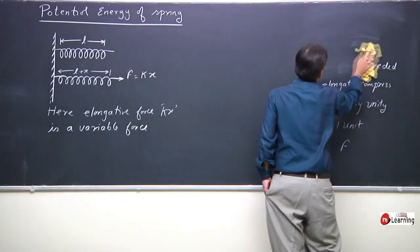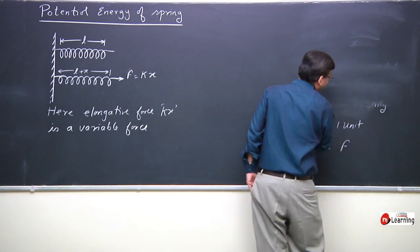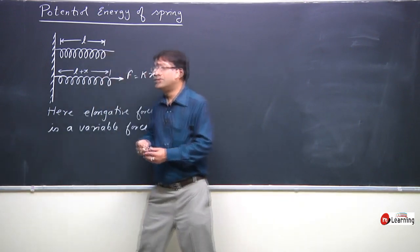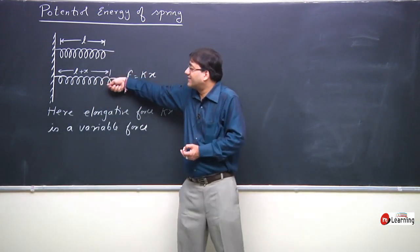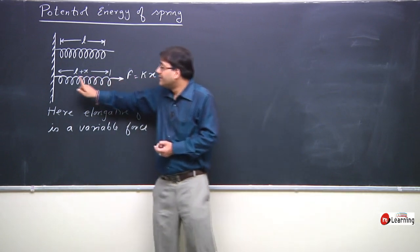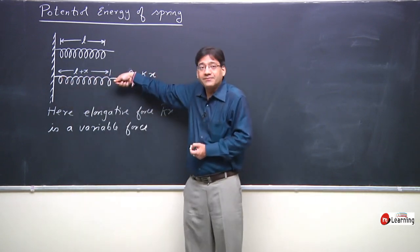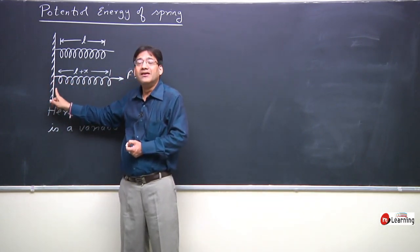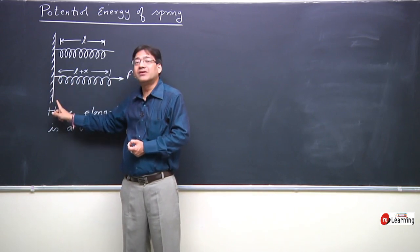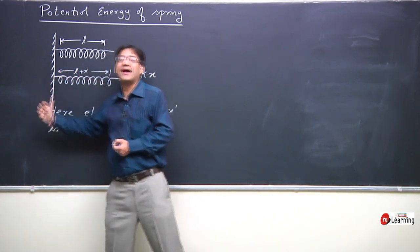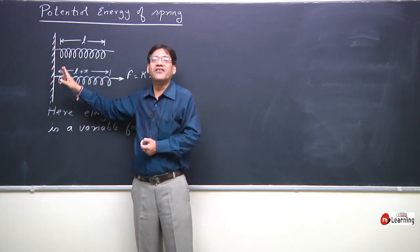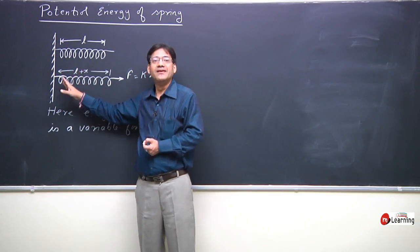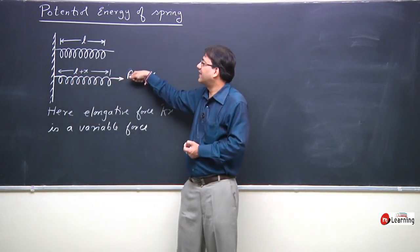Some external agent or source must be applying this force. Whatever force the person is applying here — kx — that same force is also being applied by the rigid wall or rigid support to which the spring is attached. But the rigid support has no motion, so the spring elongates due to the force kx applied at this end.